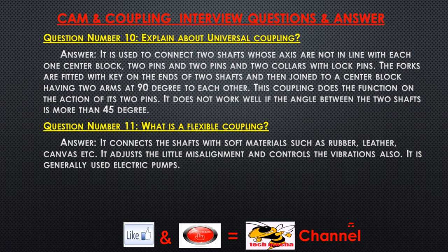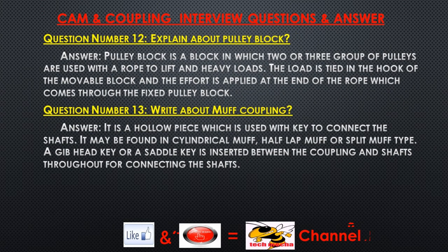Question number eleven: What is a flexible coupling? Answer: It connects the shafts with soft materials such as rubber, leather, or canvas. It adjusts little misalignment and controls vibrations. It is generally used in electric pumps. Question number twelve: Explain about a pulley block. Answer: A pulley block is a block in which two or three groups of pulleys are used with a rope to lift heavy loads. The load is tied to the hook of the movable block and the effort is applied at the end of the rope which comes through the fixed pulley block.